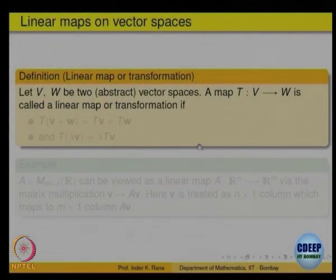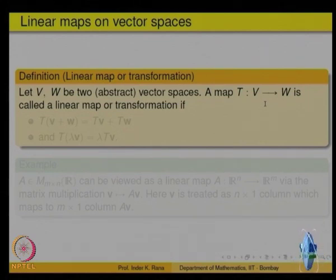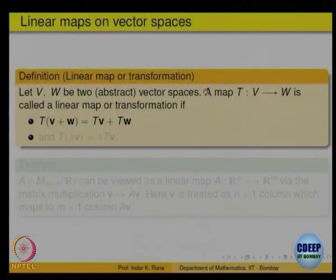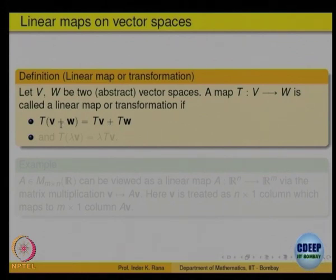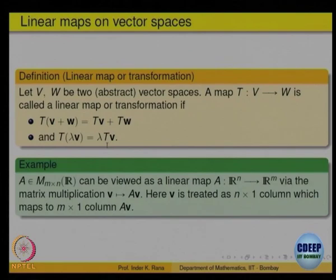So let us look at two abstract vector spaces V and W — they will be arbitrary vector spaces. A map T from V to W is called a linear map if it takes the linear structure here to the linear structure there: T(V + W) = T(V) + T(W) (addition in V on the left, addition in W on the right), and T(alpha·V) = alpha·T(V). So it preserves the linear structure — addition goes to addition of the images, and scalar multiples go to scalar multiples of the image.